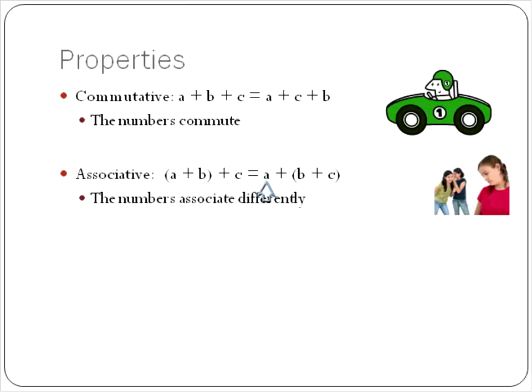Maybe A and B are a little bit snobby today. I don't know. But either way, they're associating with different numbers first. In the end, you're going to get the same result. That's the associative property.